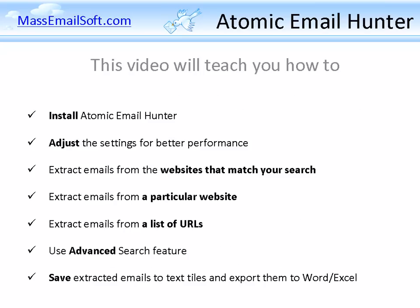So after viewing this video, you will be able to install Atomic E-mail Hunter, adjust the settings for better performance, extract emails from the websites that match your search, extract emails from a particular website, extract emails from a list of URLs, use the advanced search feature, and save extracted emails to text files or export them to Word or Excel.